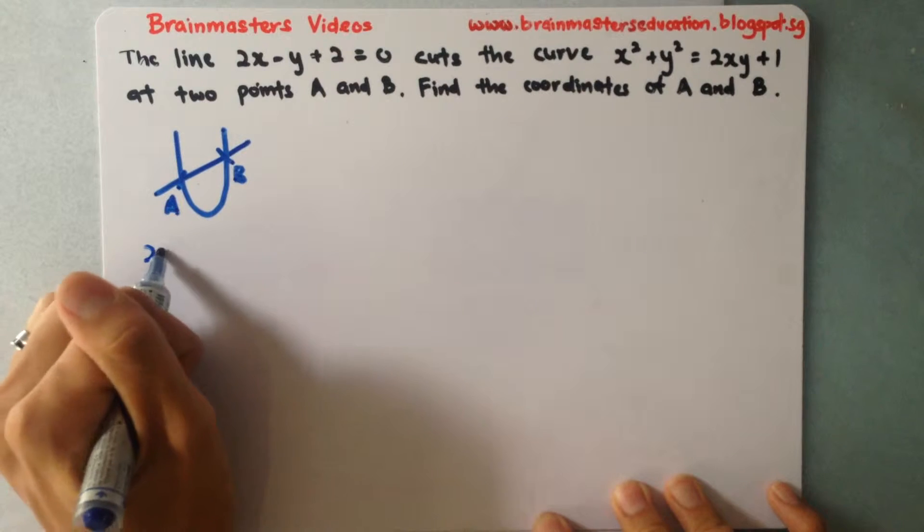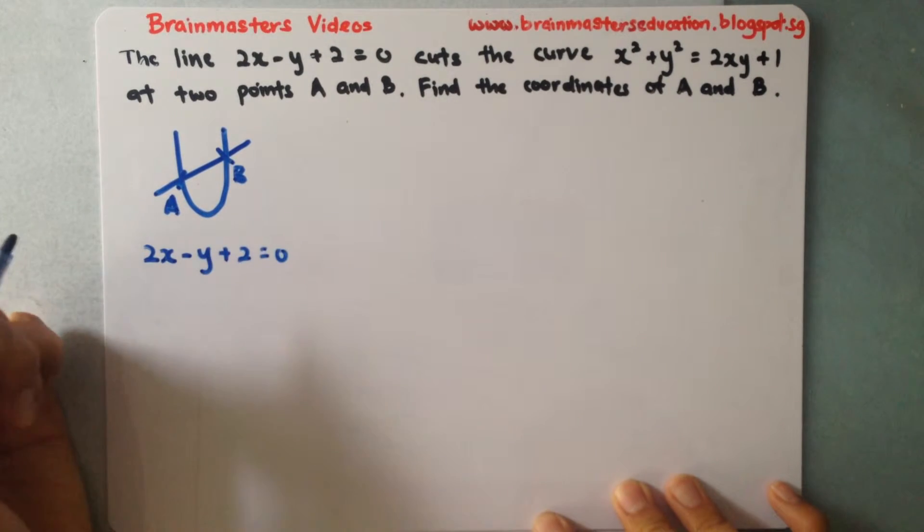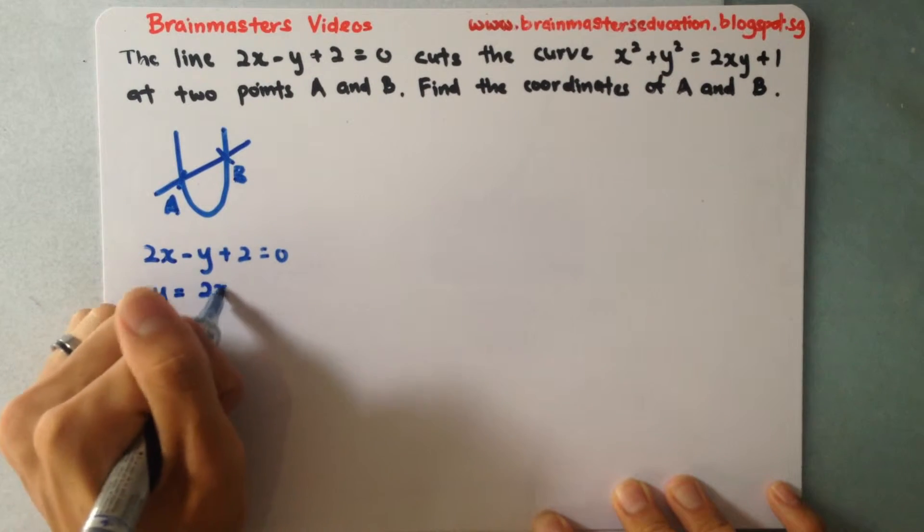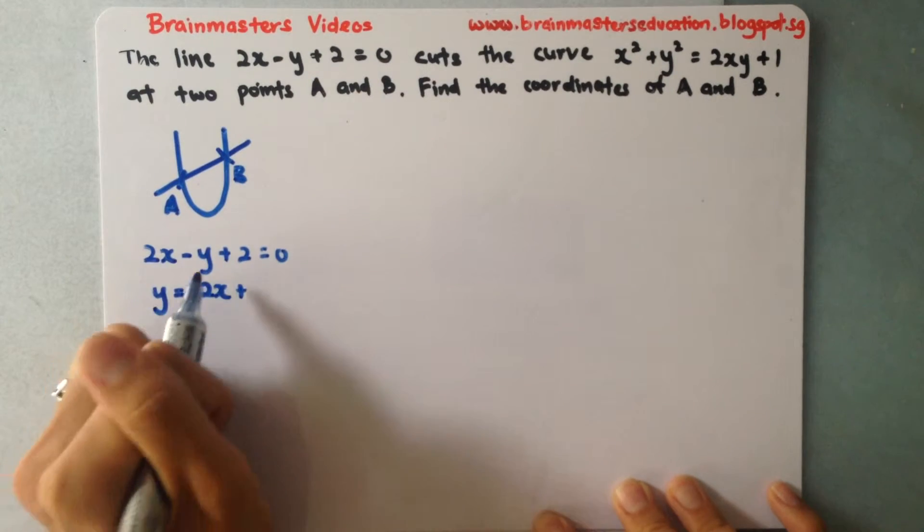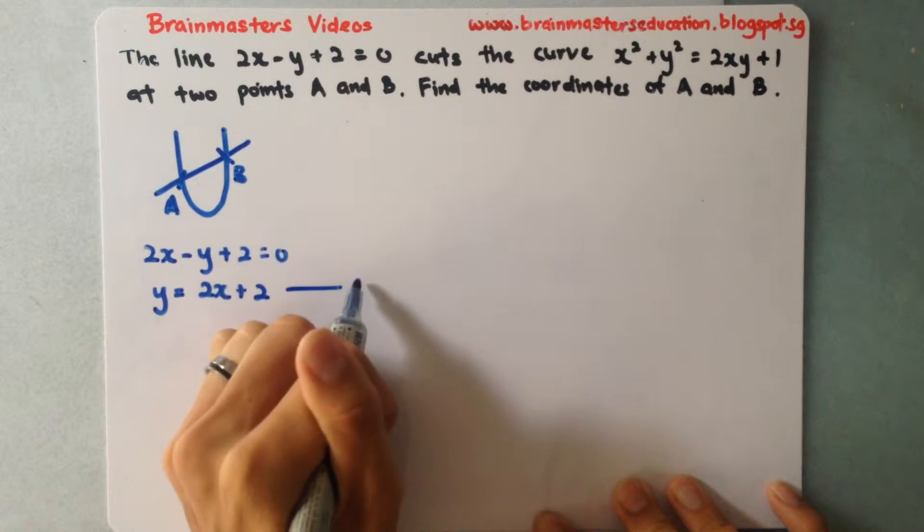So first I have the line 2x minus y plus 2 equals 0. So I'll make y the subject by bringing my y to one side. So I have this as equation 1.